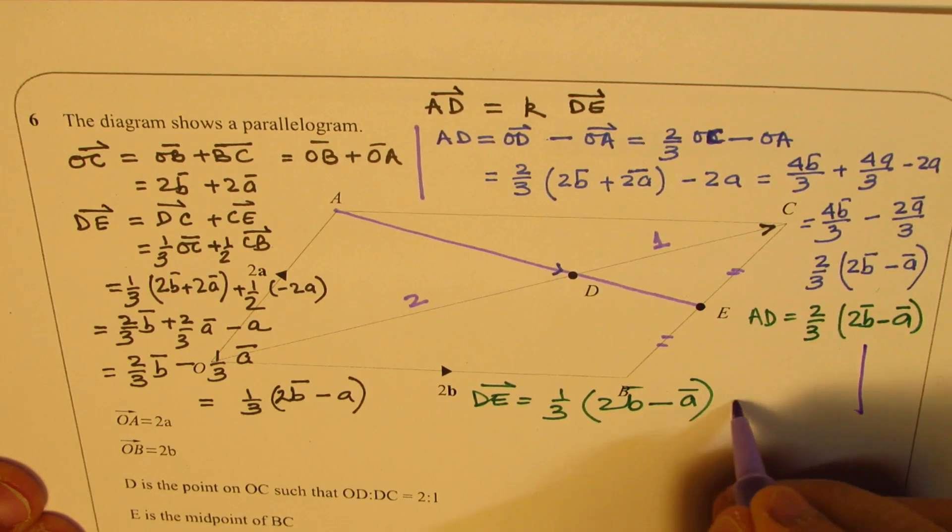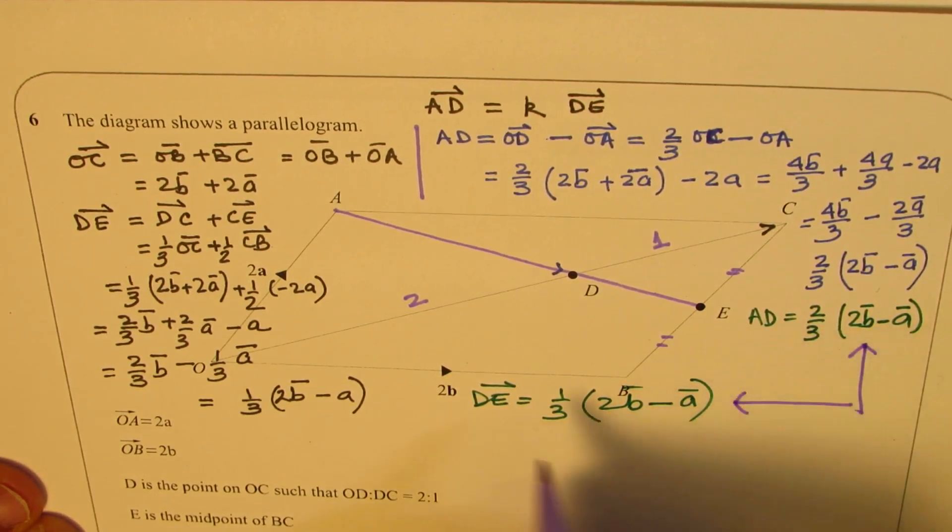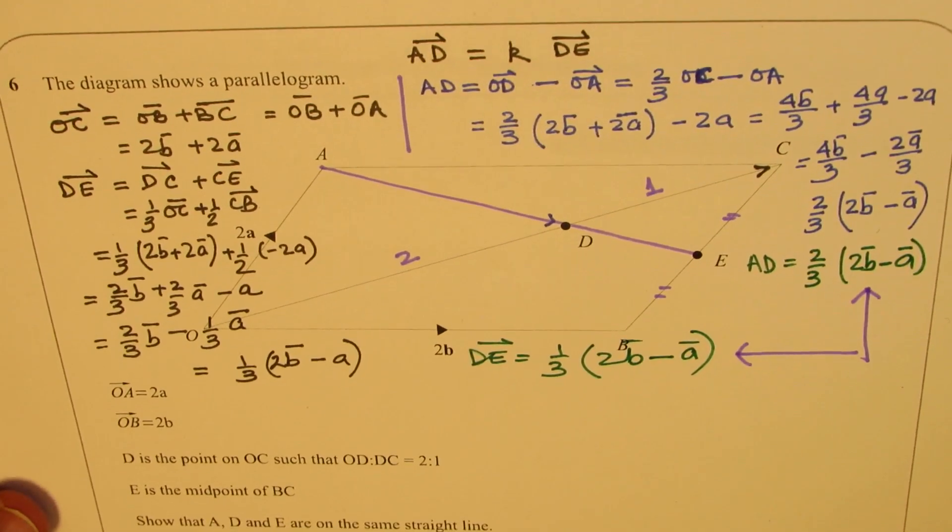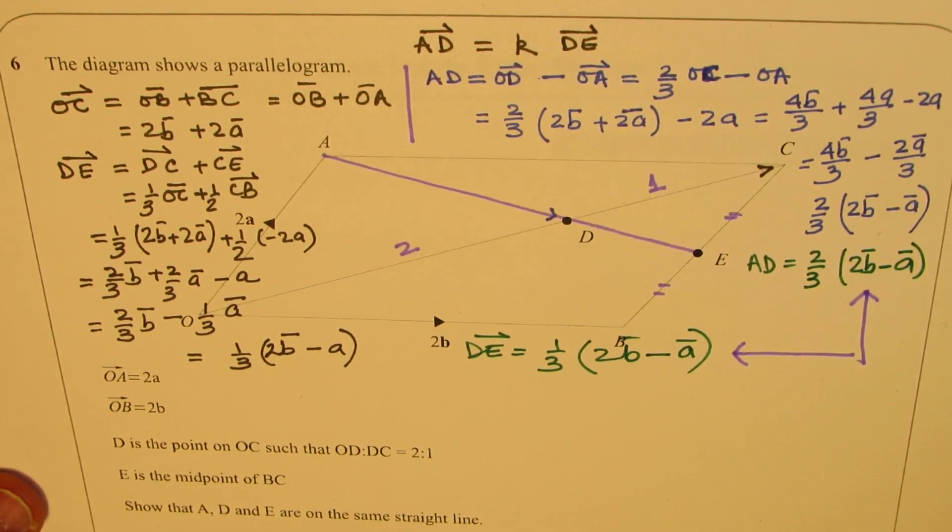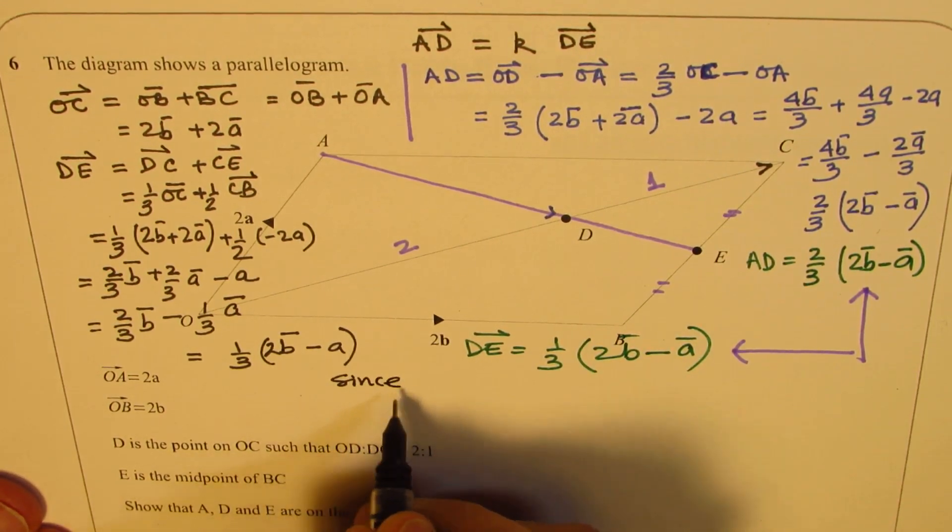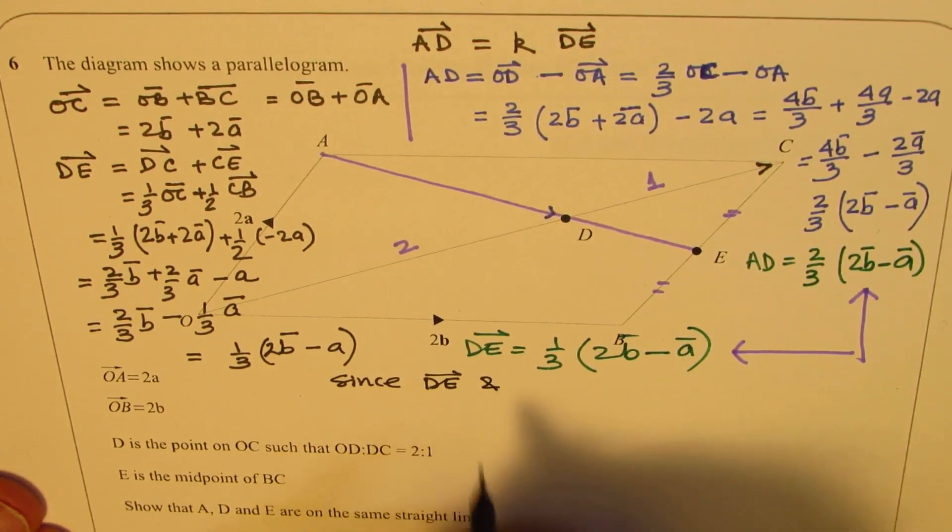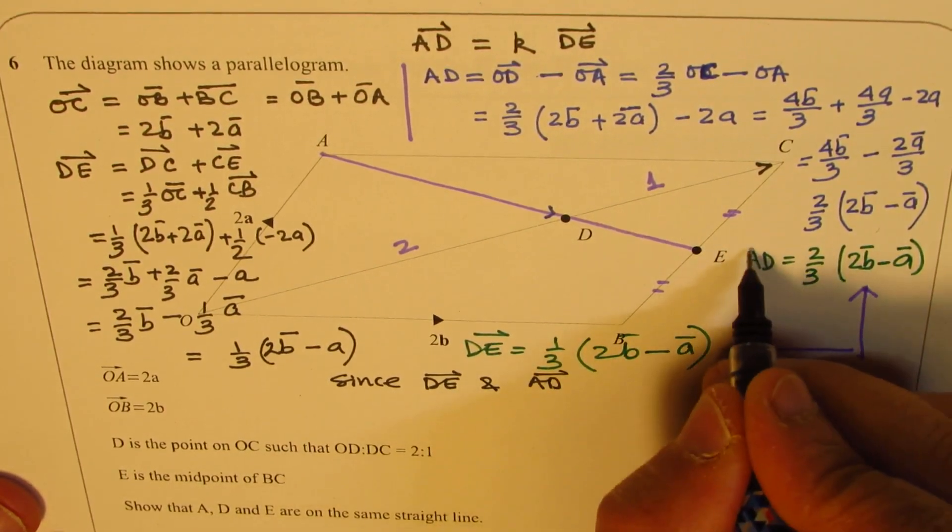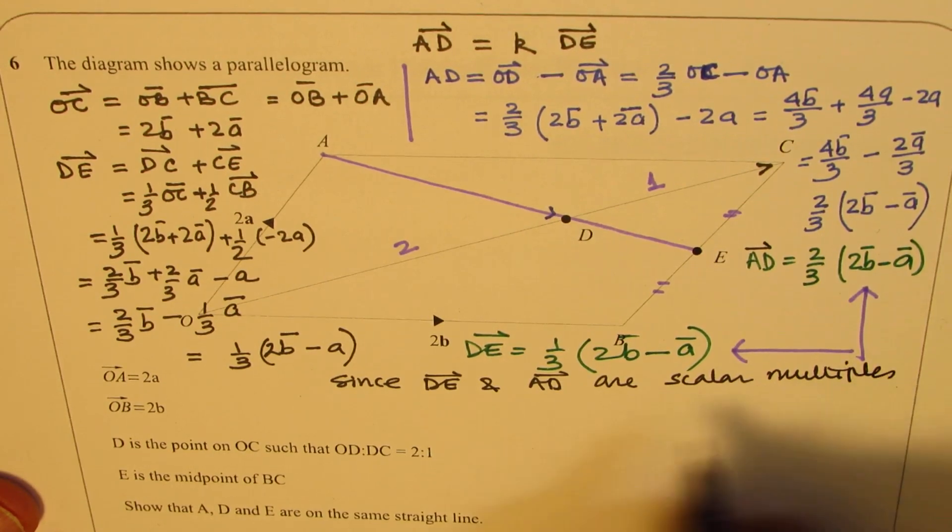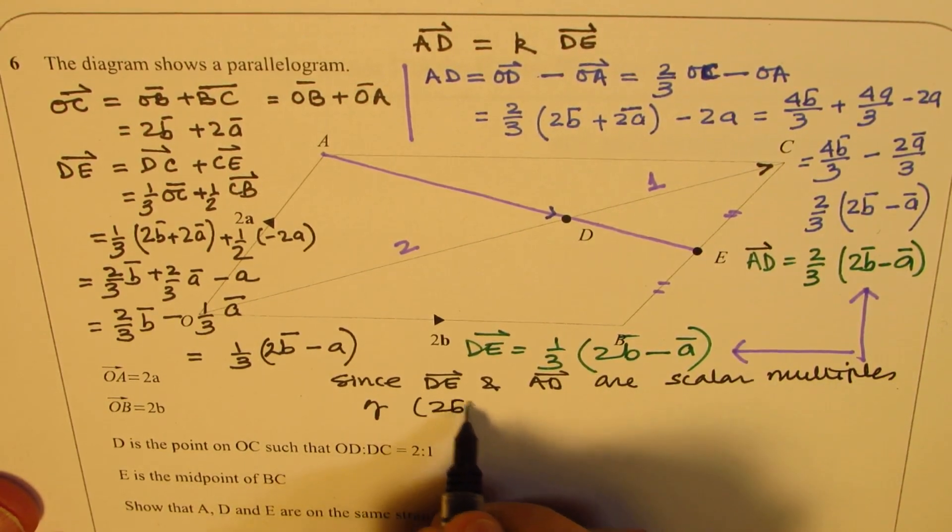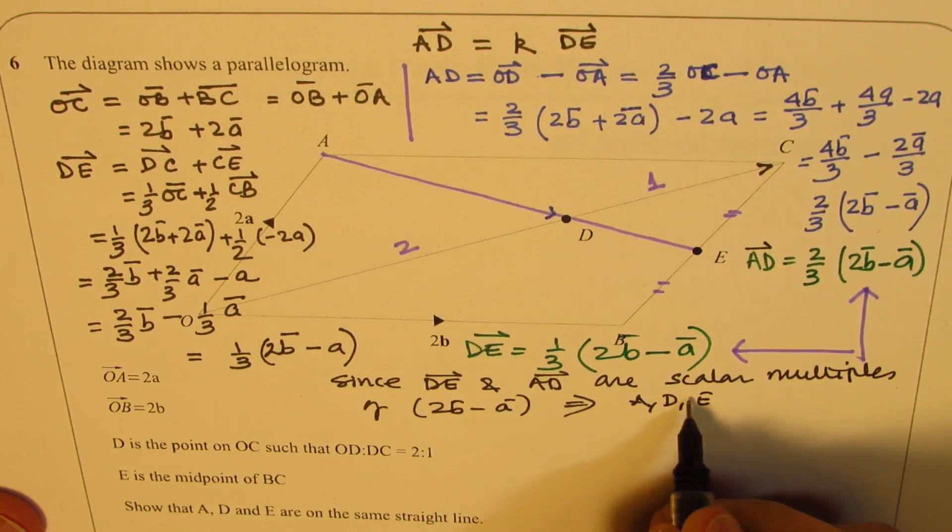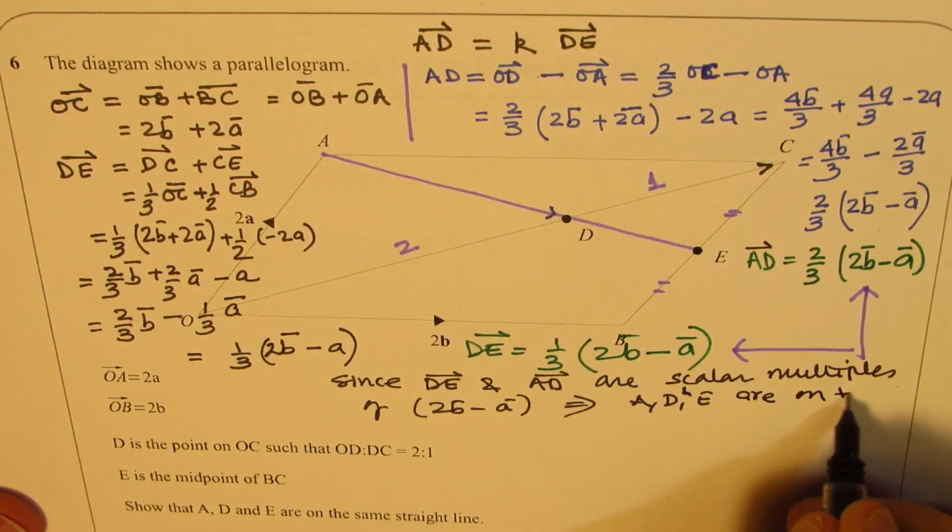You can clearly see here that both AD and DE are scalar multiples of 2B minus A. Since both are scalar multiples of 2B minus A, we can say that AD is collinear. Since DE and AD are scalar multiples of vector 2B minus A, this implies that A, D, and E are on the same line.